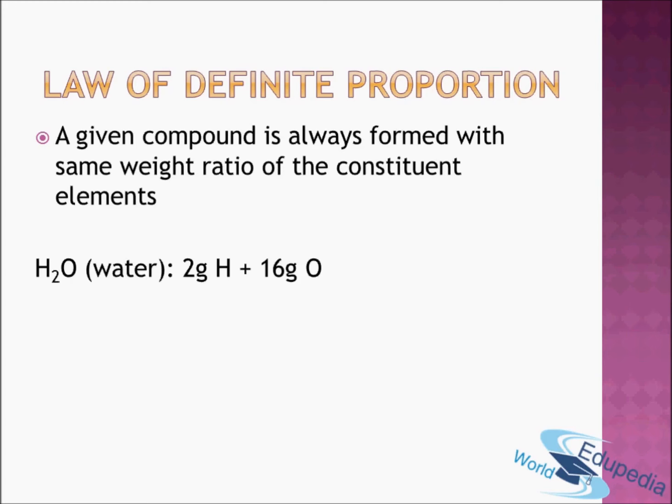You can form a water molecule here in India, you can take a water sample from Pakistan, from the USA, from Africa — in all those water molecules, you will find the ratio of hydrogen to oxygen is always 2 to 16, or 1 to 8. So in any given compound, the weight ratio of constituent elements is always the same or constant. That's why it is also called the law of constant composition.